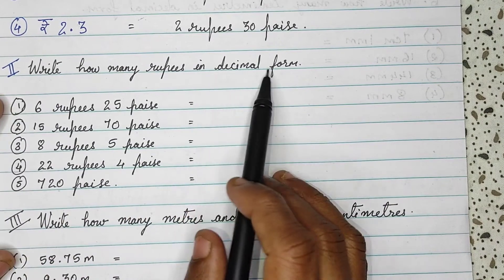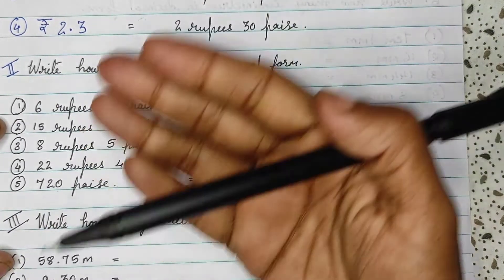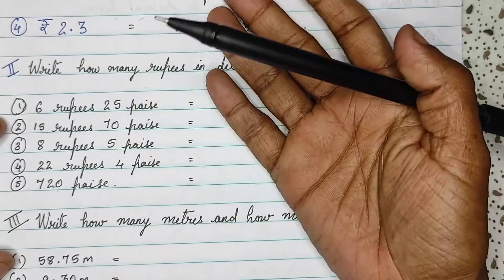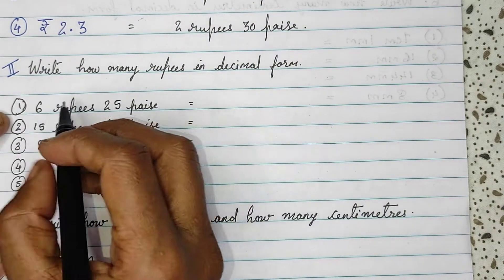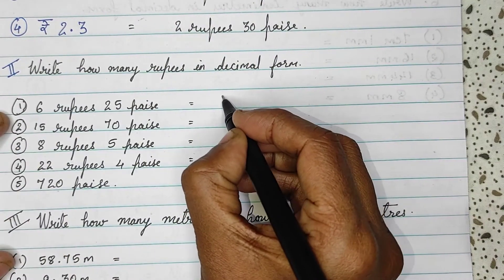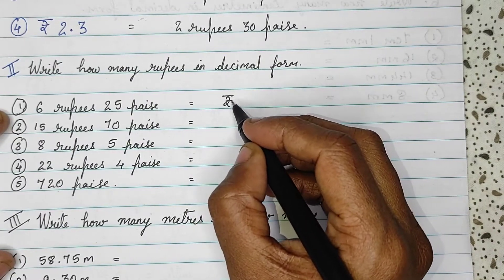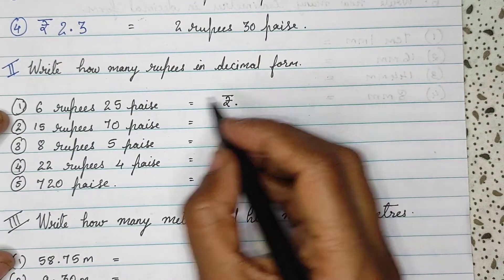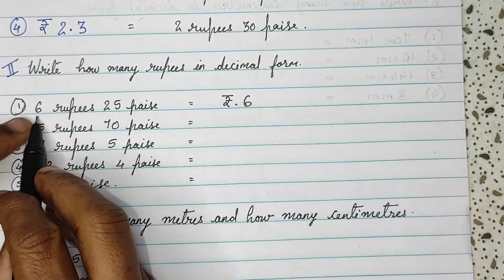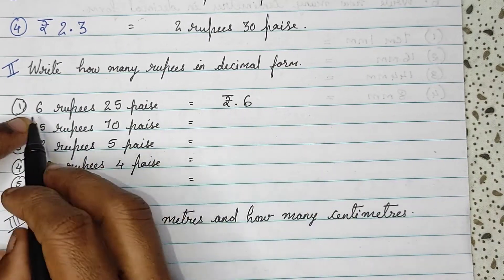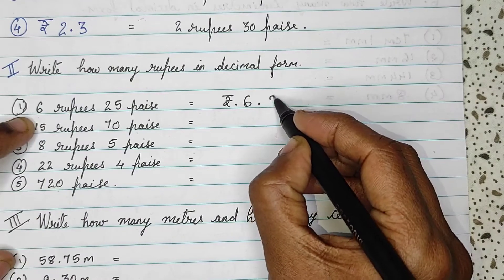Now, write how many rupees in decimal form — same but in reverse. We have to write in reverse form. So, here 6 rupees and 25 paise. You have to make the Indian currency symbol, and then write 6. So, R 6.25.